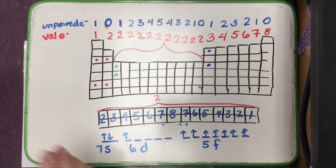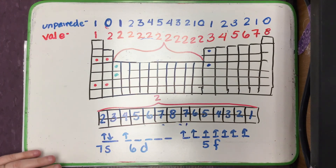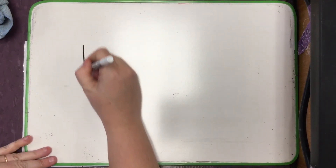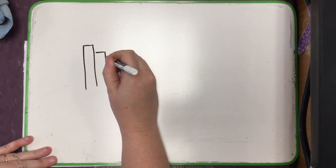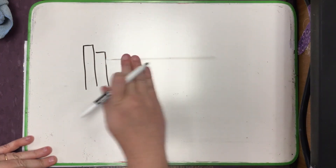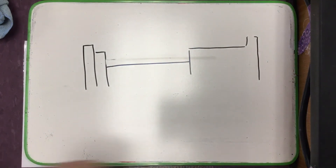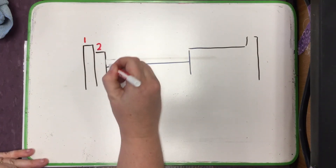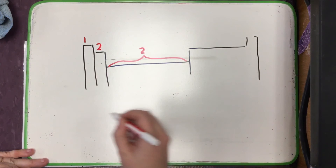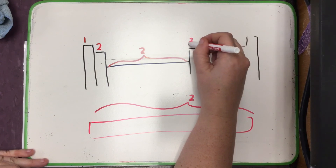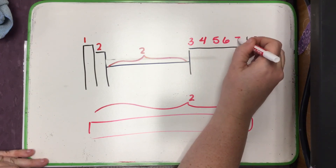Because of the way the periodic table is set up and the way we look at electron configurations and orbital notations, there are two main patterns you should be able to pick out very easily. For valence electrons: in the S block it's 1, 2; everybody in the middle — the D block and the F block — stays at 2; and then in the P block it goes 3, 4, 5, 6, 7, 8.